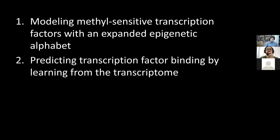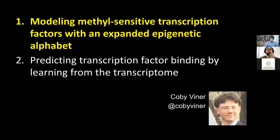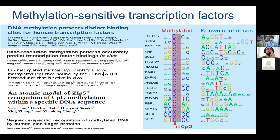There are two projects I'll talk about, both done by incredible graduate students in my lab. The first is by Kobe Viner — modeling methyl-sensitive transcription factors with an epigenetically expanded alphabet. Over recent years, people have realized DNA methylation can play a role in sequence-specific motif recognition. A key paper by Hu and colleagues showed that if DNA is methylated, motifs can be quite different from known consensus motifs in databases like JASPAR.